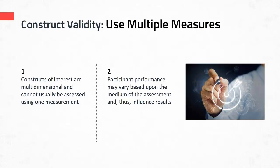Choosing an instrument that measures what you're aiming to change is very important for construct validity. Kasdan also notes that it may be preferable to use multiple measurements to improve construct validity in a study, for two main reasons: constructs of interest are often multidimensional and cannot usually be addressed with simply one measurement, and participant performance may vary based upon the medium of assessment and thus influence results.